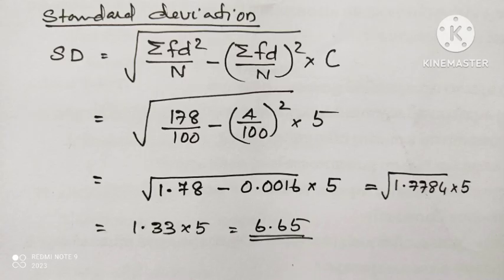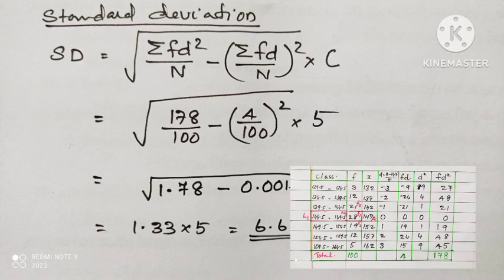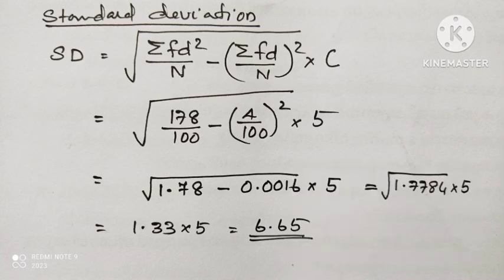Formula for finding standard deviation is square root of sigma fd squared divided by n minus sigma fd by n whole squared, into c. Substituting each value: 178 by 100 minus 4 by 100 whole squared, into 5. The answer is 6.65.